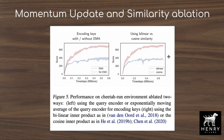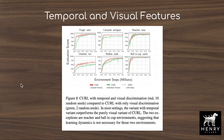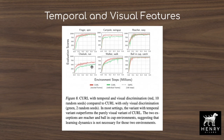Another ablation shows performance differences between using a stack of the last four frames as observation O versus a single pixel image. In environments like cheetah run, walker, cartpole, and finger spin, there's a big benefit from using temporal features — the stacked frames — compared to just using a single image frame at the current time step as input to the RL and contrastive loss framework.